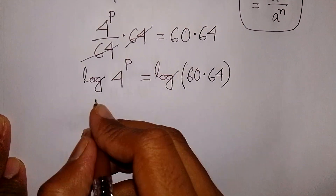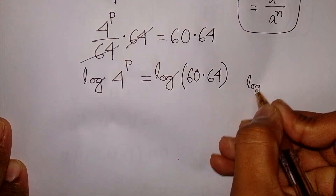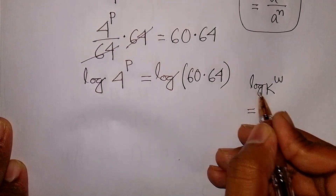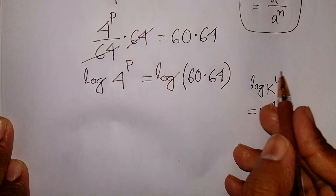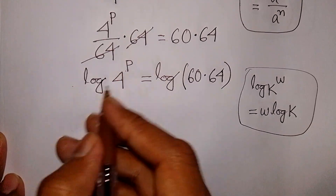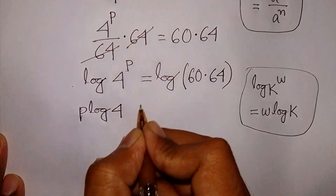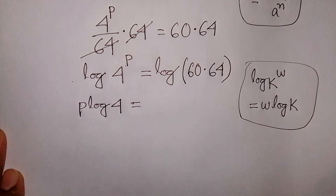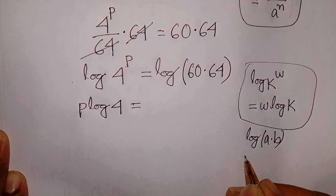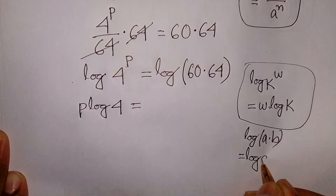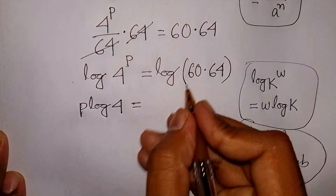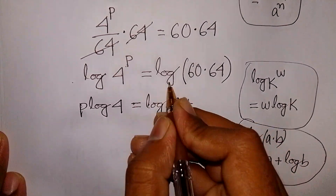In the next step, we apply the rule that log k power w is equal to w log k. This power w jumps to the front. So according to this rule, the power p will jump to the front. It will be p times log 4 is equal to — and we know the formula log of a times b is equal to log a plus log b — so it will be log 60 plus log 64.